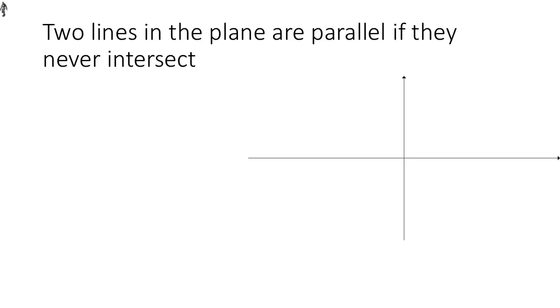We're going to talk about lines being parallel, which is a particular relationship that two lines can have. Let's start with a definition. Two lines in the plane are parallel if they never intersect with each other. And let's see if we can get a handle on what exactly that means.